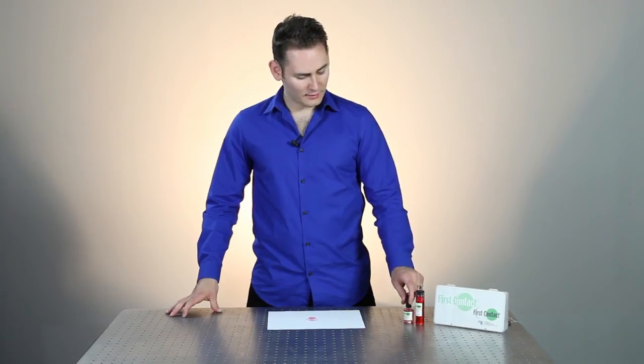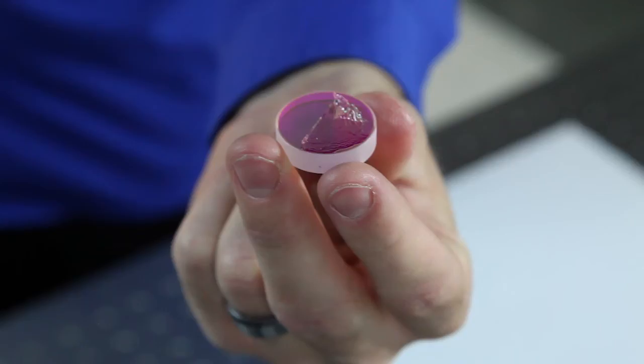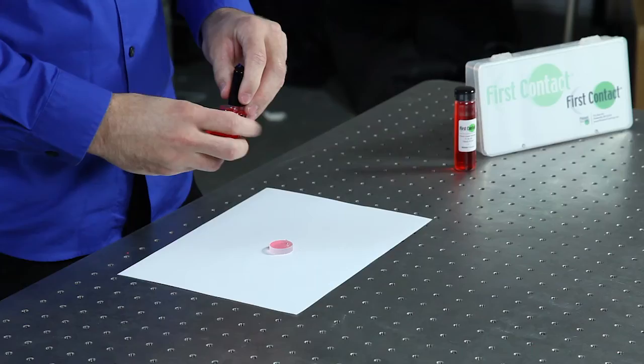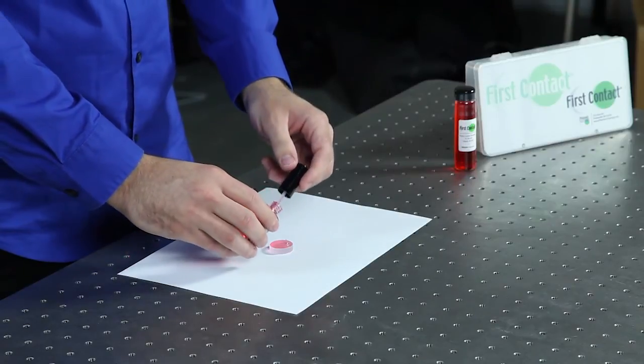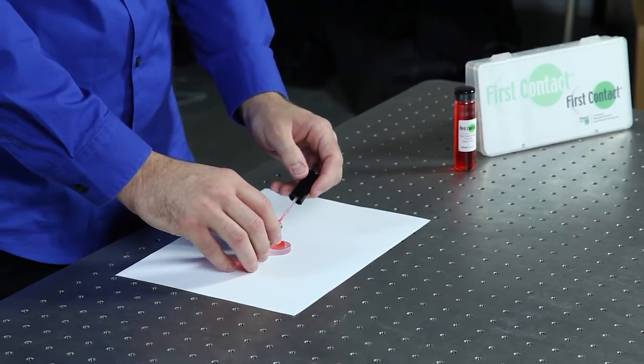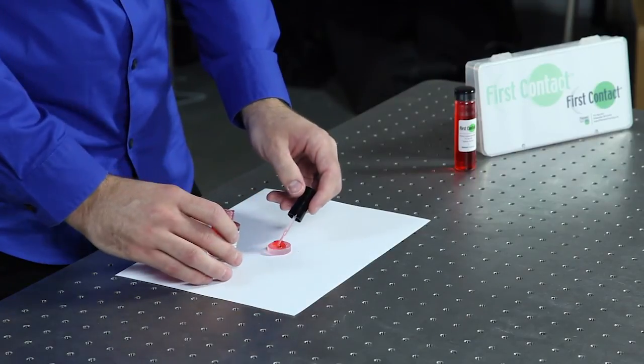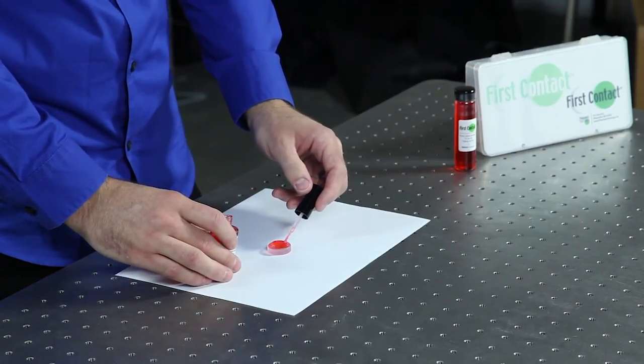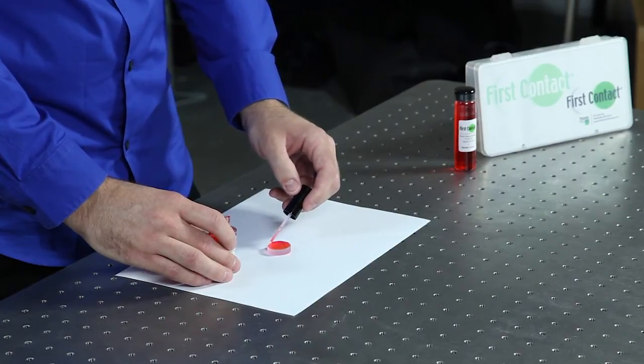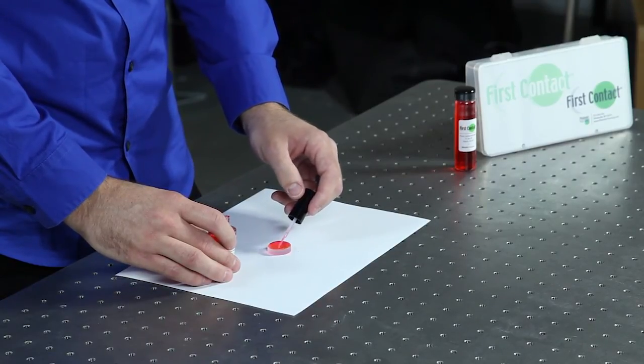If First Contact Polymer is applied incorrectly and too thin sometimes the polymer will tear. The way to solve this problem is to just apply more polymer on the surface. It will dissolve the already solid part and incorporate it in the new layer. So a thicker layer is applied, allowed to dry for the appropriate time and then removed and everything on the surface will come off with it.